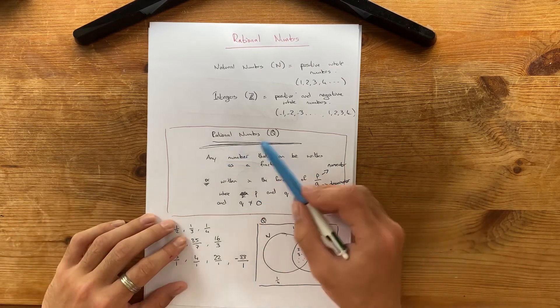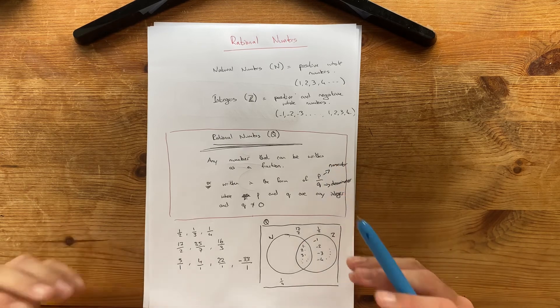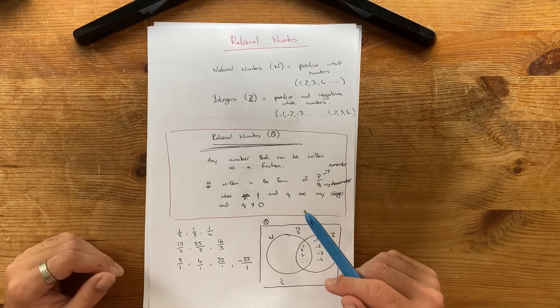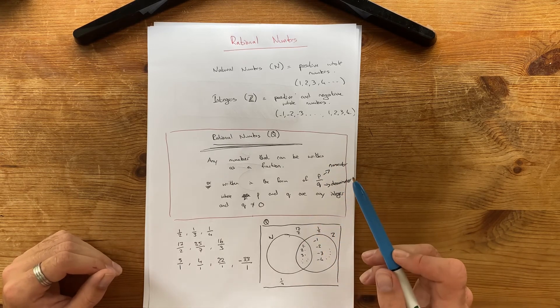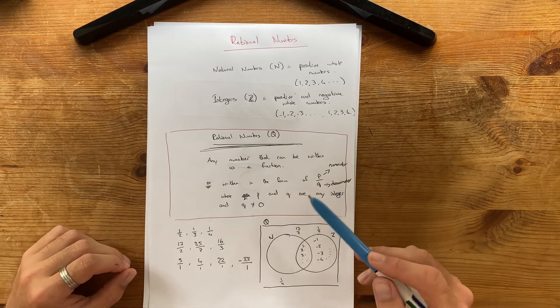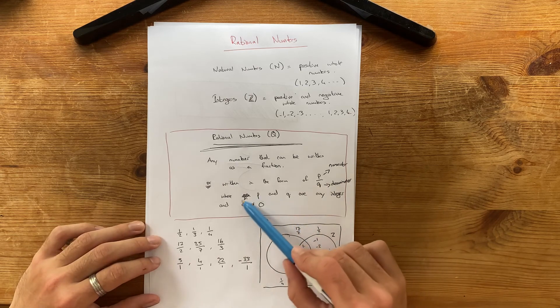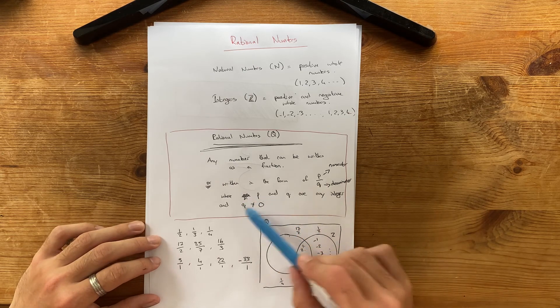So, the biggest thing to take out of this is a rational number is any number that could be written as a fraction. And we're going to have a look through all the different types of rational numbers and different types of fractions. And the video directly after this will explain why you can't have Q as 0.